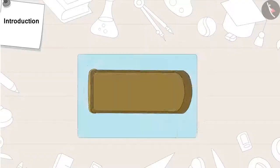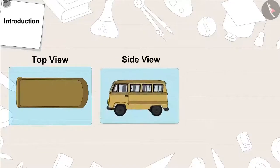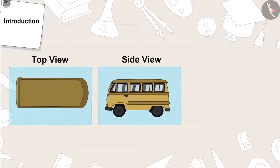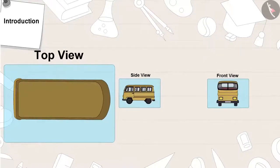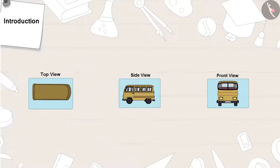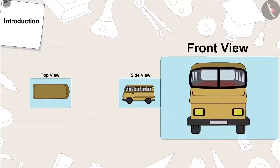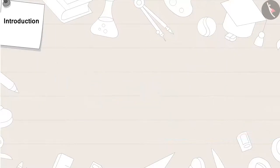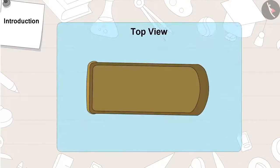All objects can be viewed from three different sides: from above — that is top view — side view, and front view. Let's understand this in detail.